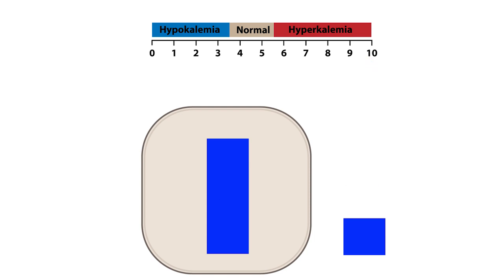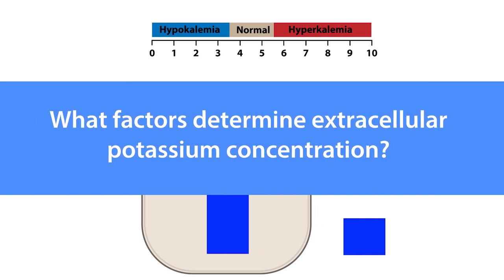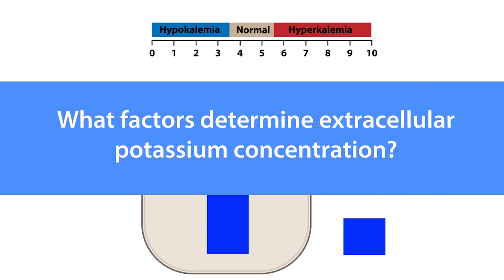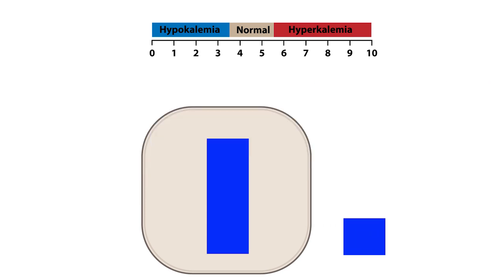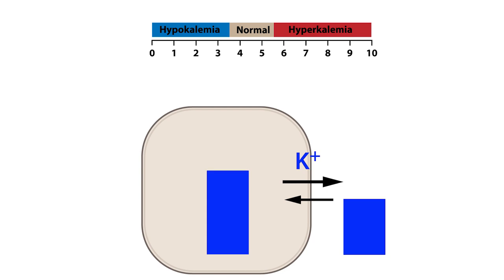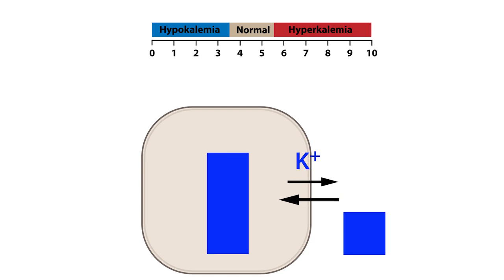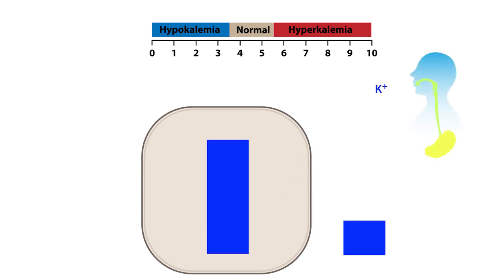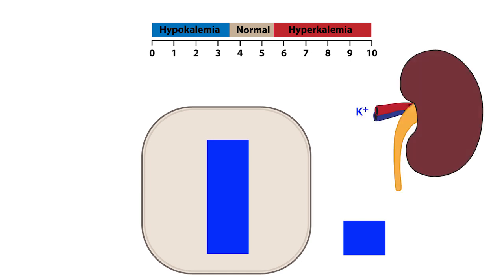Now that we have that out of the way, let's ask our final question: what factors determine extracellular potassium concentration? There are three important factors. First, the movement of potassium ions between the intracellular and extracellular compartments. Second, potassium intake and absorption along the digestive tract. And third, the excretion and reabsorption of potassium by the kidneys.